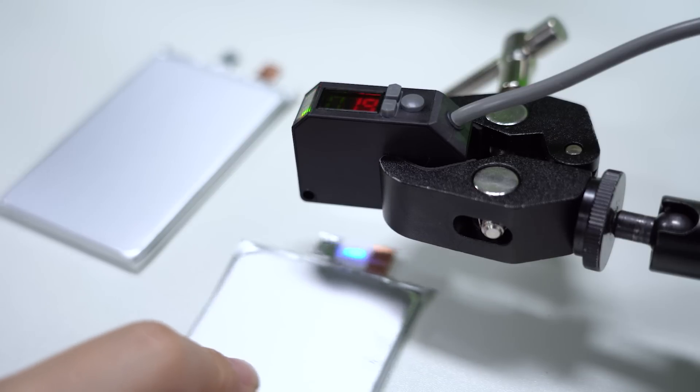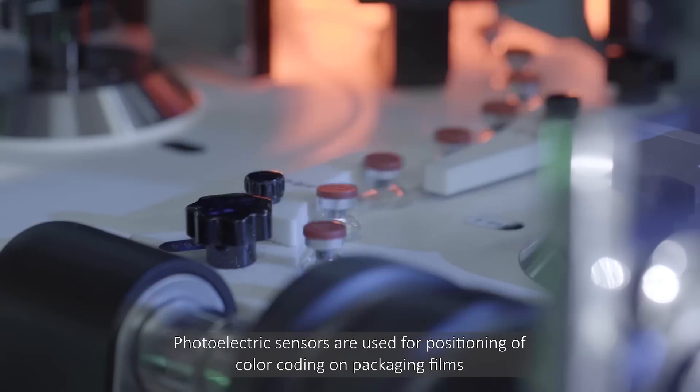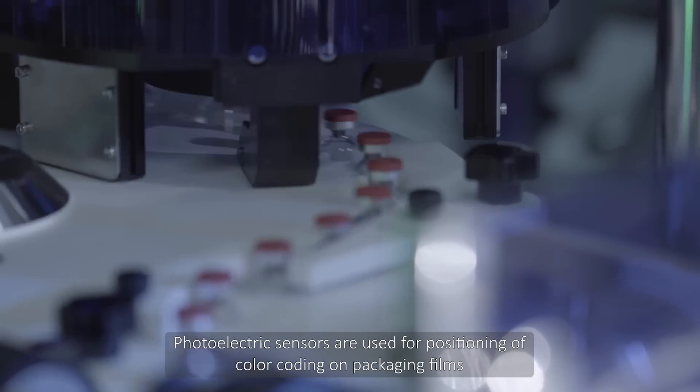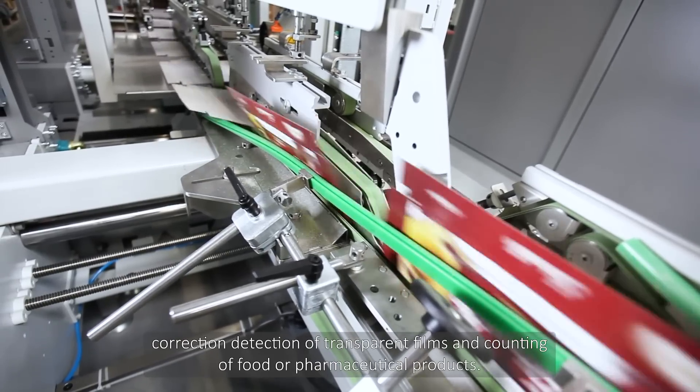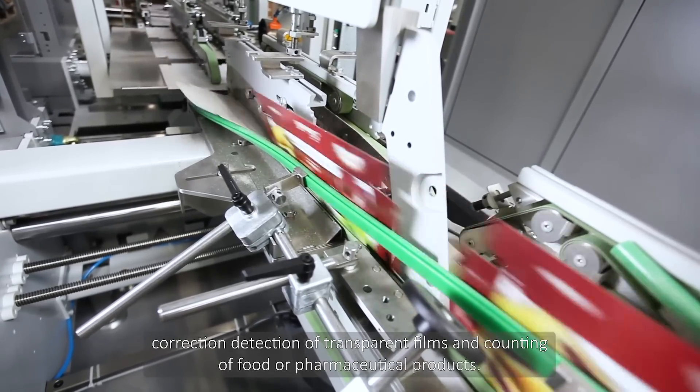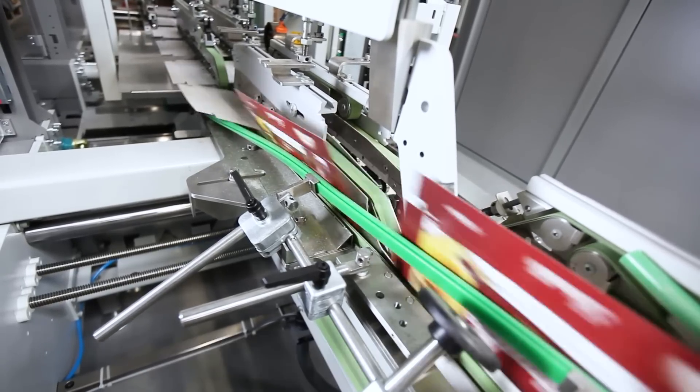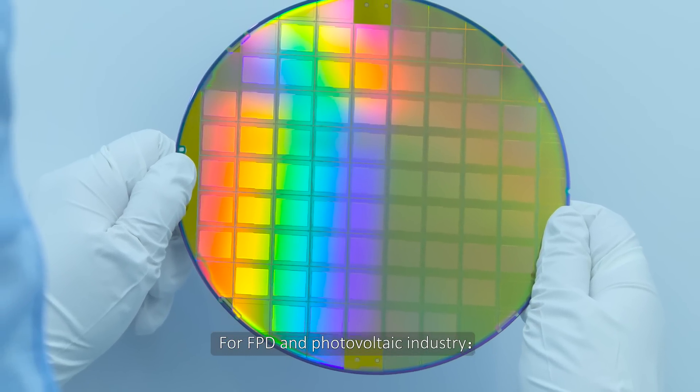For food, pharmacy, and packaging industries, photoelectric sensors are used for positioning of colors, coding, unpacking films, correction detection of transparent films, and coding of food or pharmaceutical products.